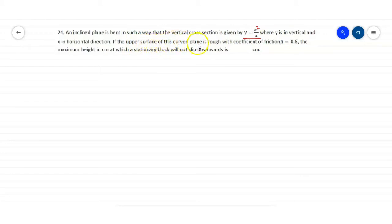If the upper surface of this curved plane is rough with coefficient of friction mu equals 0.5, find the maximum height in centimeters at which a stationary block will not slip downwards.